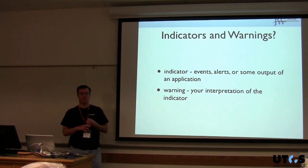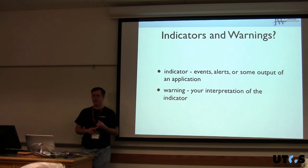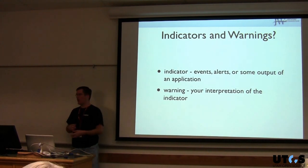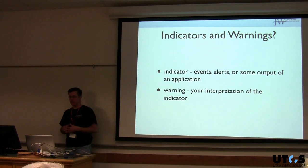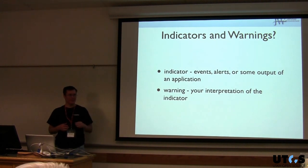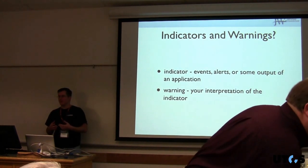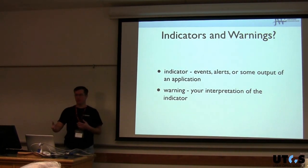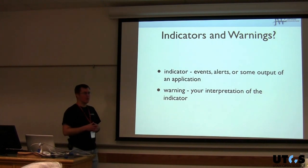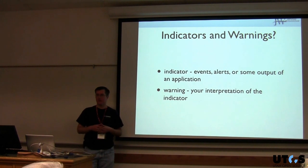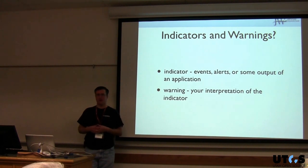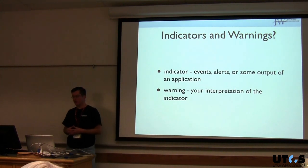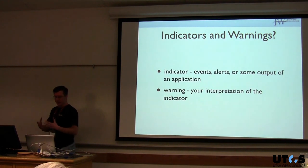An indicator is something that happens on your network — some traffic has gone by, an event occurred, somebody opened a program, output of some application — anything like that. The warning comes in when you've looked at the data and interpreted the output of your intrusion detection system. For example: this was an attack against an Apache web server I can't update because of some application I'm forced to run, and the attack might have been successful — that's a warning I need to start looking at.